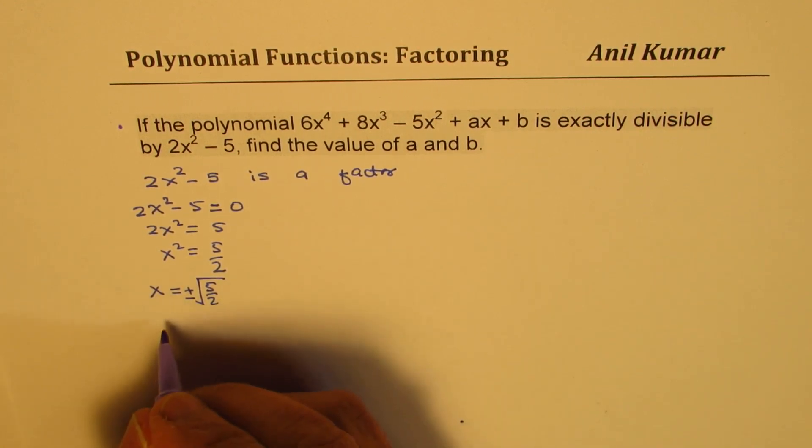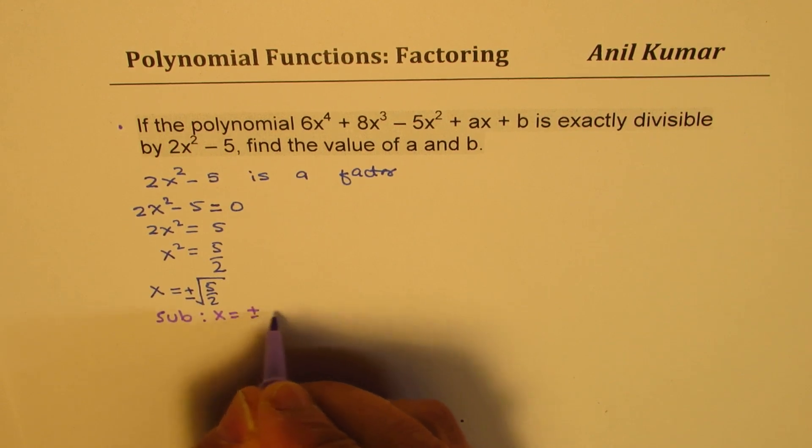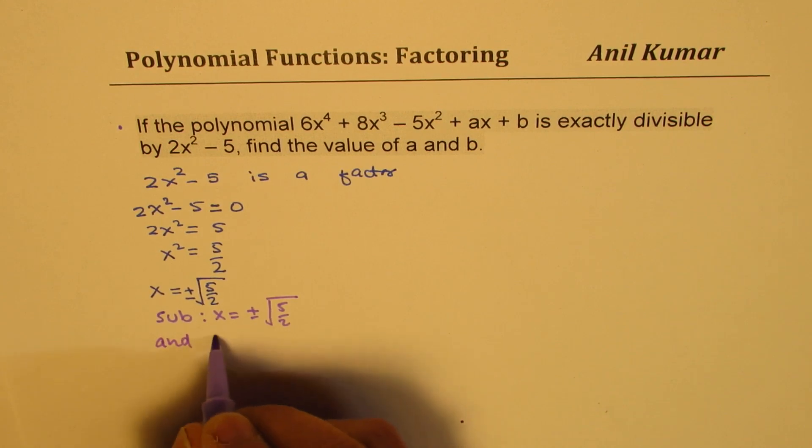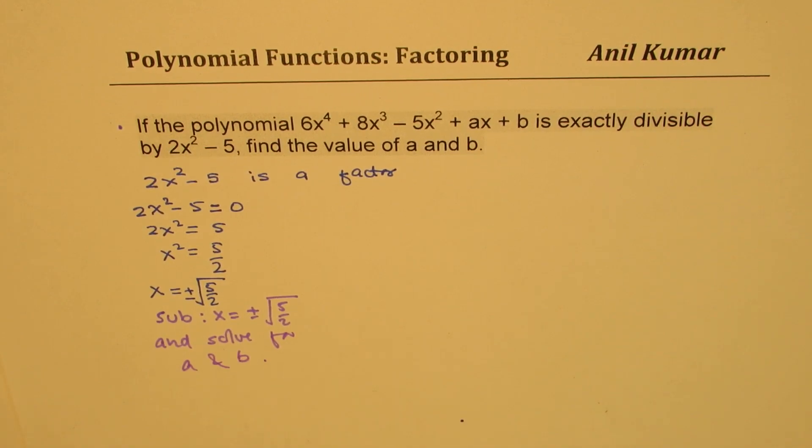What I say is substitute x equals to plus minus square root 5 over 2 and solve for a and b. This is one method which you could definitely adopt.